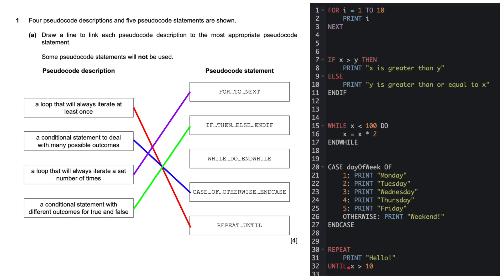A conditional statement to deal with many possible outcomes. Well, this would be a case statement. Case of otherwise and case such as days of the week. And then we've got a loop that will always iterate a set number of times. For, to and next. Here we go. For i equals 1 to 10, print i next. So from 1 to 10, a range of numbers.